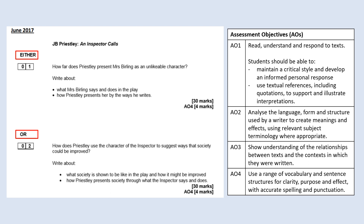If you look to your right, we have the assessment objectives. These are identical to how they were at DP1. So in the same way for Romeo and Juliet and A Christmas Carol, for all the texts that your child has studied, it is important that students maintain a critical style and give their own response. It is important that they include textual references. This question is harder than previously because students do not have an extract, so it is very crucial that they take the time as they're preparing to revise and make sure that they have quotations for each and every single one of the characters or themes. It's also important that they can analyse the language, form and structure used in those quotations, and that they can show an understanding of the relationships between the text and the context in which it was written.